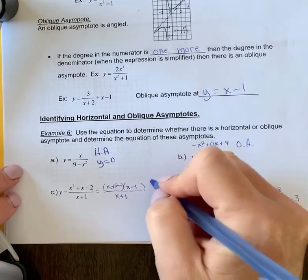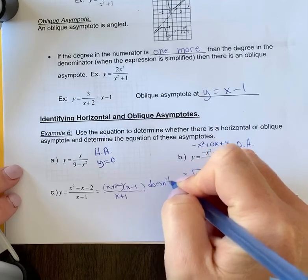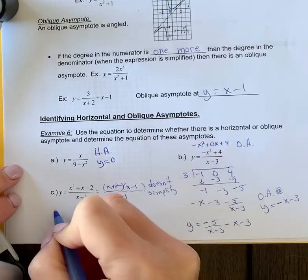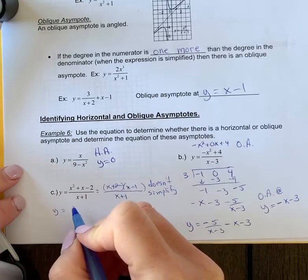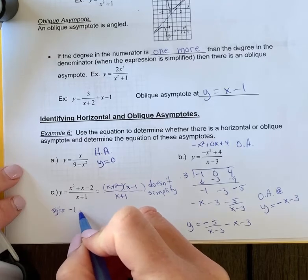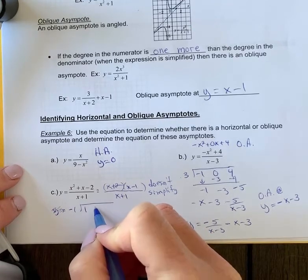That's the only reason I did this - to see that it doesn't simplify. Okay, so let me do the division here. We have negative one, one, one, and negative two.